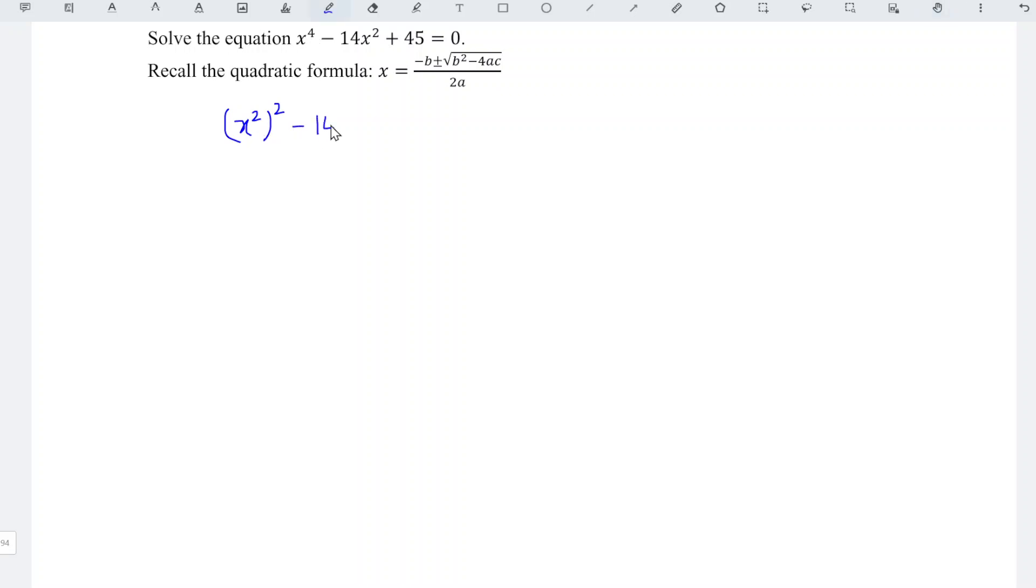So the equation is x squared squared minus 14 times x squared plus 45 equals 0. We can let y equal x squared.